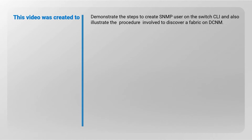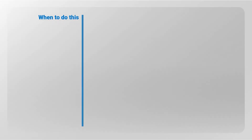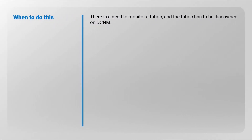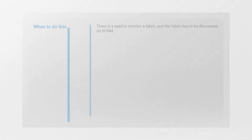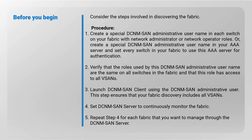When to do this: there is a need to monitor a fabric, and the fabric has to be discovered on DCNM. Before you begin, consider the steps involved in discovering the fabric. Create a special DCNM SAN administrative username in each switch on your fabric with network administrator or network operator roles, or create a special DCNM SAN administrative username in your AAA server and set every switch in your fabric to use this AAA server for authentication.